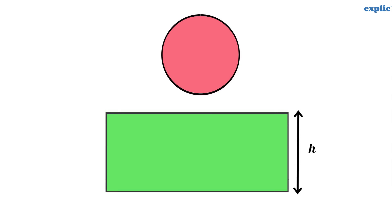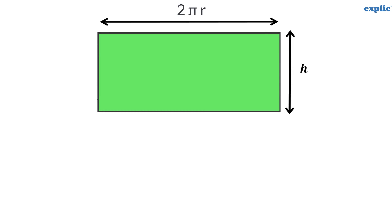The length of the rectangle would be equal to perimeter of the circle, which is equal to 2PiR. Therefore, the area of the rectangle would be 2PiRH.